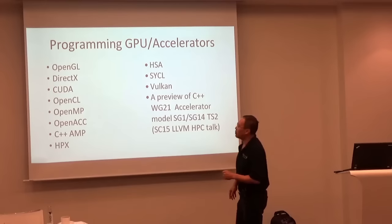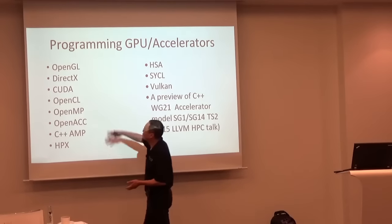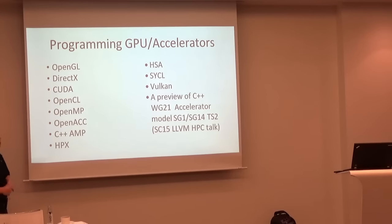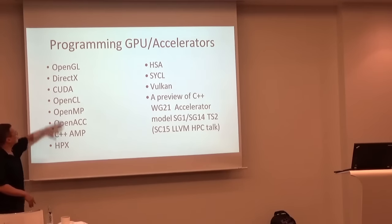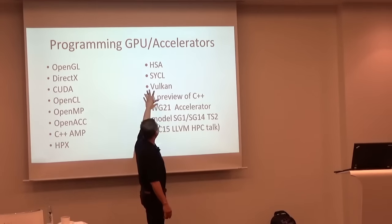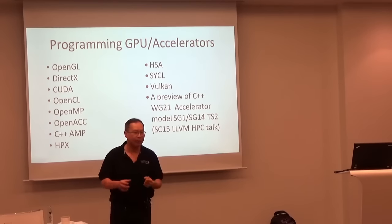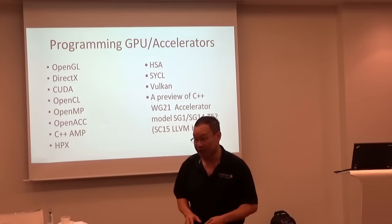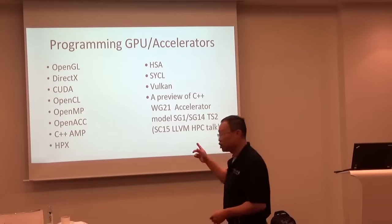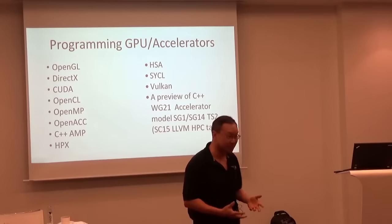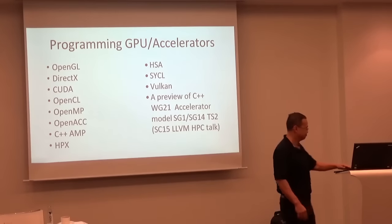We started with shader languages like OpenGL, CUDA, and DirectX, and slowly reached higher levels of abstraction with OpenCL, C++ AMP, and OpenMP. These days other people are implementing things using SYCL, Vulkan as the new OpenGL replacement, and HPX — which has already implemented most of the parallelism STL.